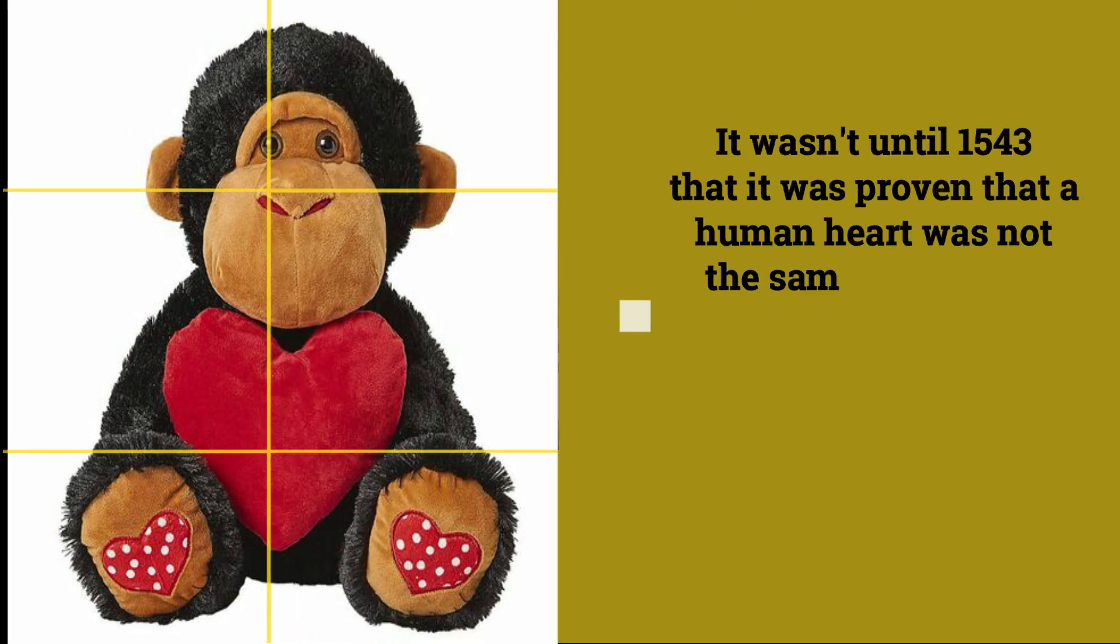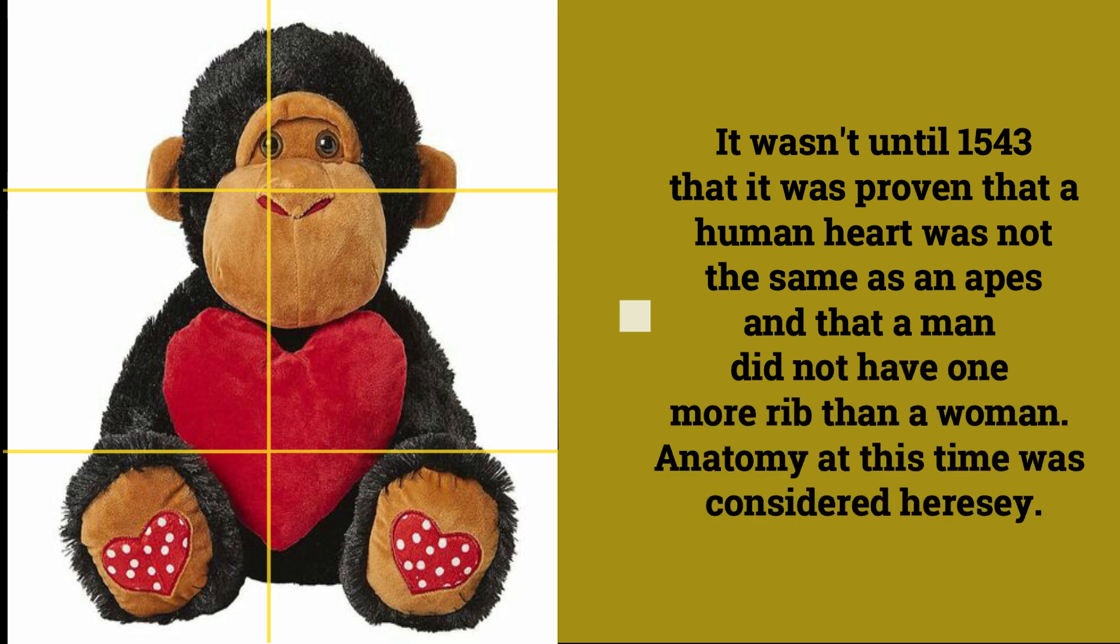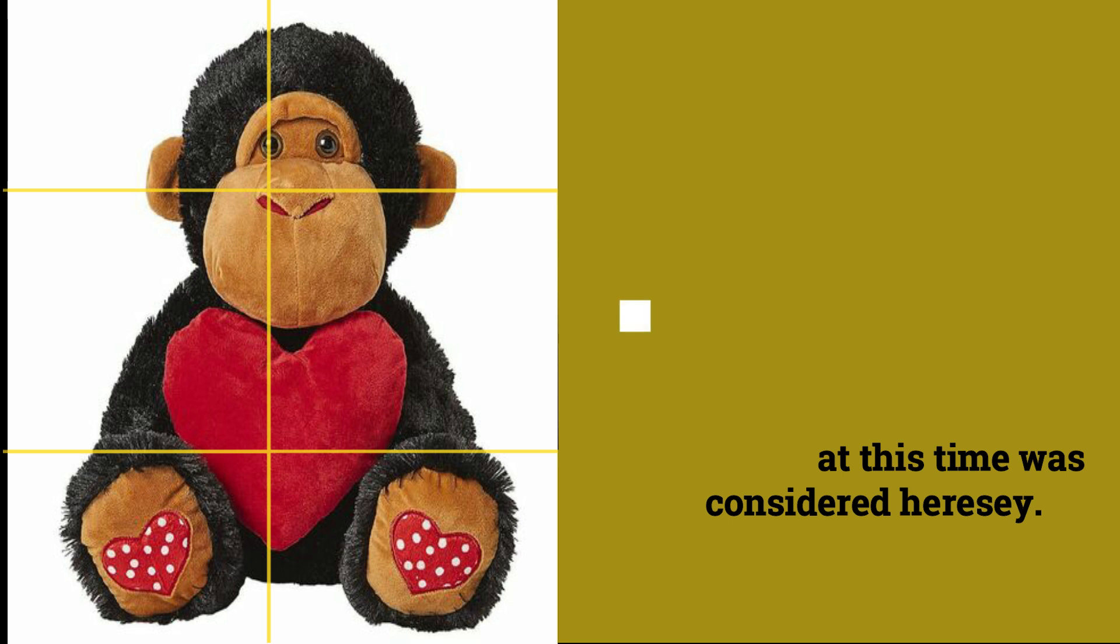It wasn't until 1543 that it was proven that a human heart was not the same as an ape's and that a man did not have one more rib than a woman. Anatomy at this time was considered heresy.